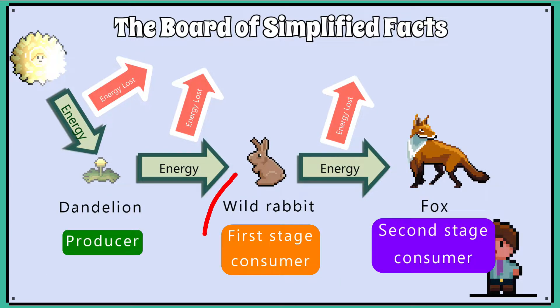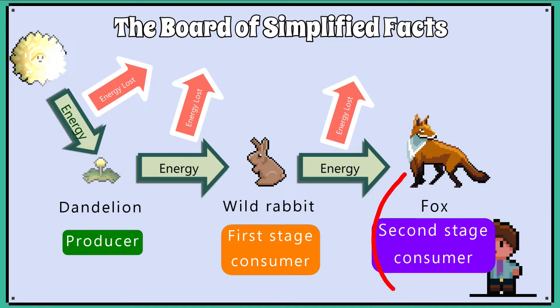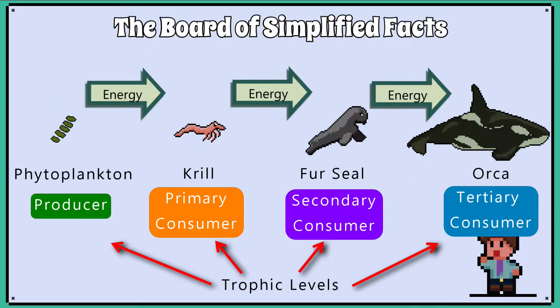In our case, the first stage consumer is the rabbit. The fox, a carnivore which mainly consumes animal matter, is the second stage consumer in this food chain. Other terms can be used to describe food chains.